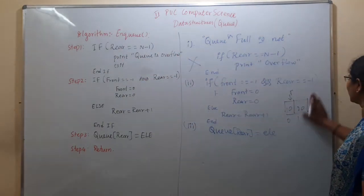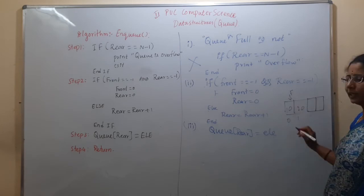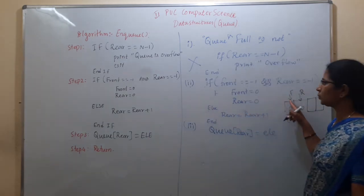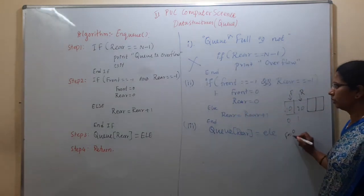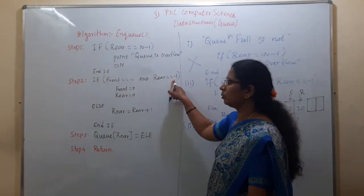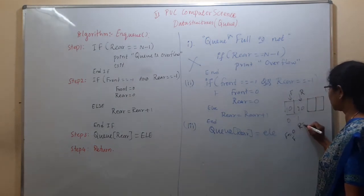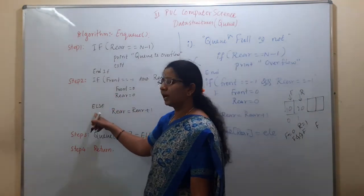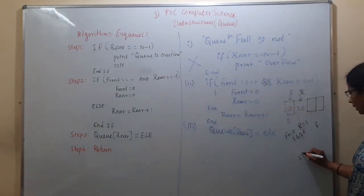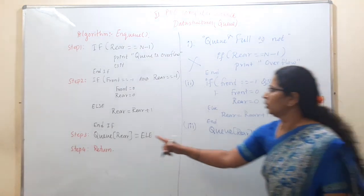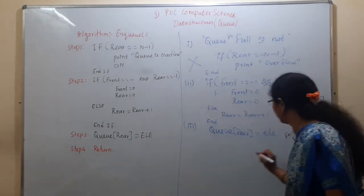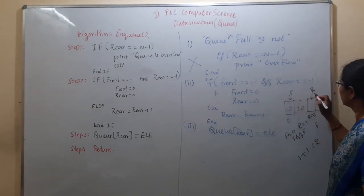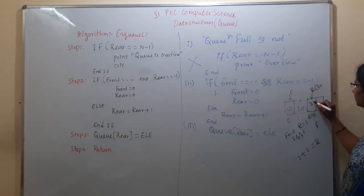Now suppose the queue contains some elements, with rear at position 1. Front equals minus one? No, it is 0. Rear equals minus one? No, it is 1. Both conditions are false, so control moves to the else part. Rear is 1, increment by 1 gives 2. Then insert the new element at Q of 2 — rear pointer moves to position 2 and the new element is inserted there.